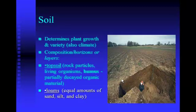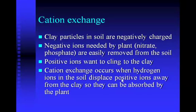Cation exchange is an important process in plant nutrition. Clay particles in soil have a negative charge, which is good because negative ions needed by a plant — like nitrate and phosphate — are repelled by the negative clay particles and are easily picked up by the plant. Positive ions want to cling to the clay because the clay is negative. Cation exchange occurs when hydrogen ions in the soil push the positive ions off the clay, allowing the plant to absorb positive ions like magnesium that it needs.